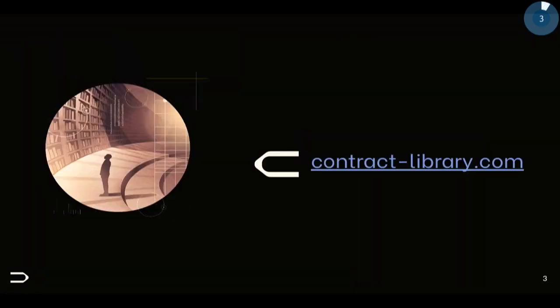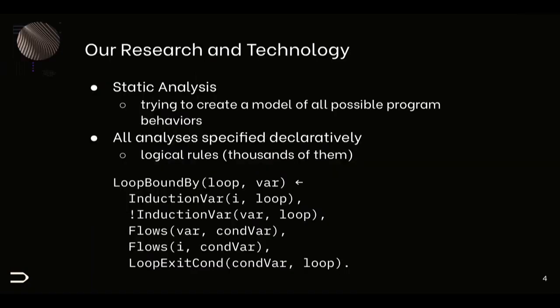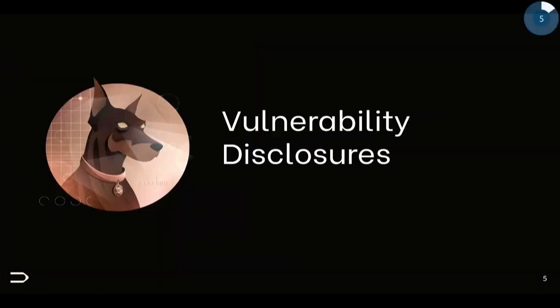Sorry about that — it is wired by the way, it's not the wireless network acting up. So we have contract library. Our core technology is static analysis — meaning trying to produce models of programs, of smart contracts in this case, for all possible program executions. We write static analysis by writing thousands and thousands of little rules that look like logic.